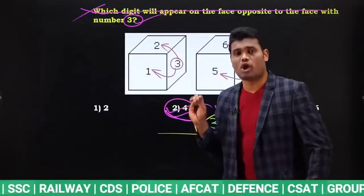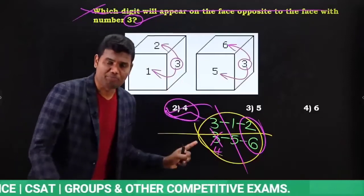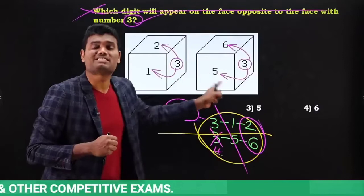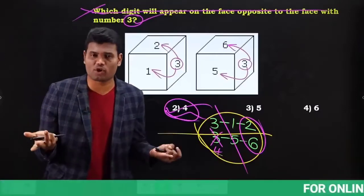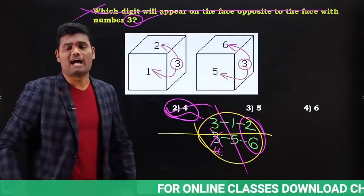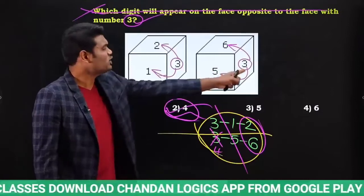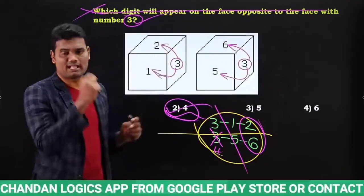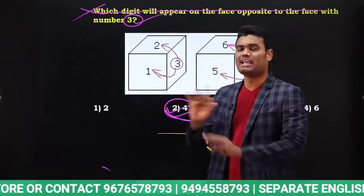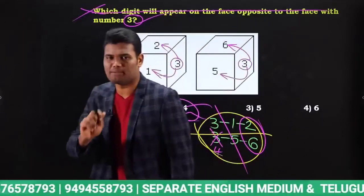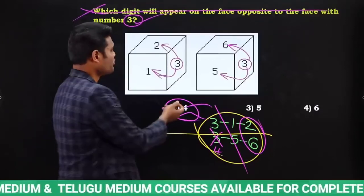If someone asks what is opposite to 4 — I already told you: if the question is about the common number, the missing number is your answer; if the question is about the missing number, the common number is your answer. Here the question is about 3, which is common, so missing number 4 is the answer. If the question is what is opposite to 1, answer is 5. If opposite to 6, answer is 2. Whatever you do in one view, the same pattern you follow in the other view.